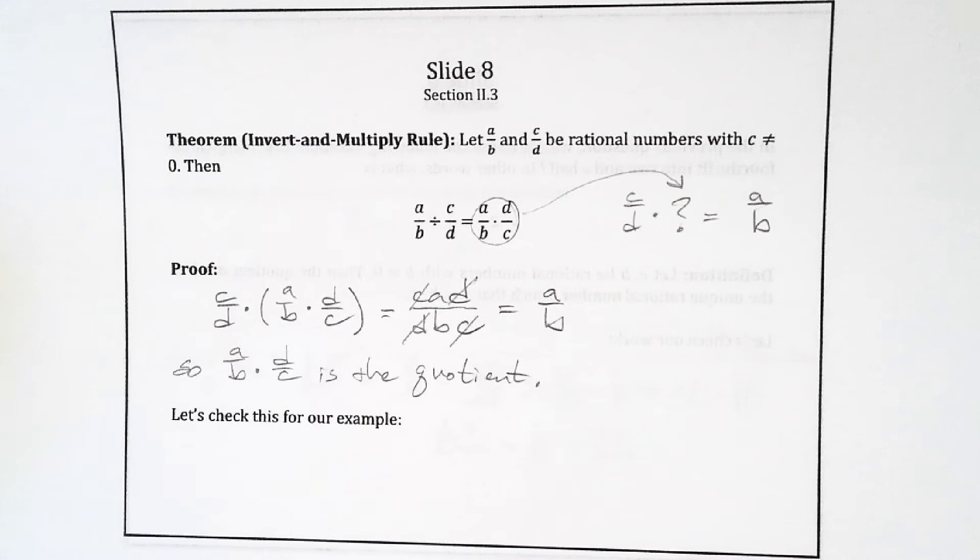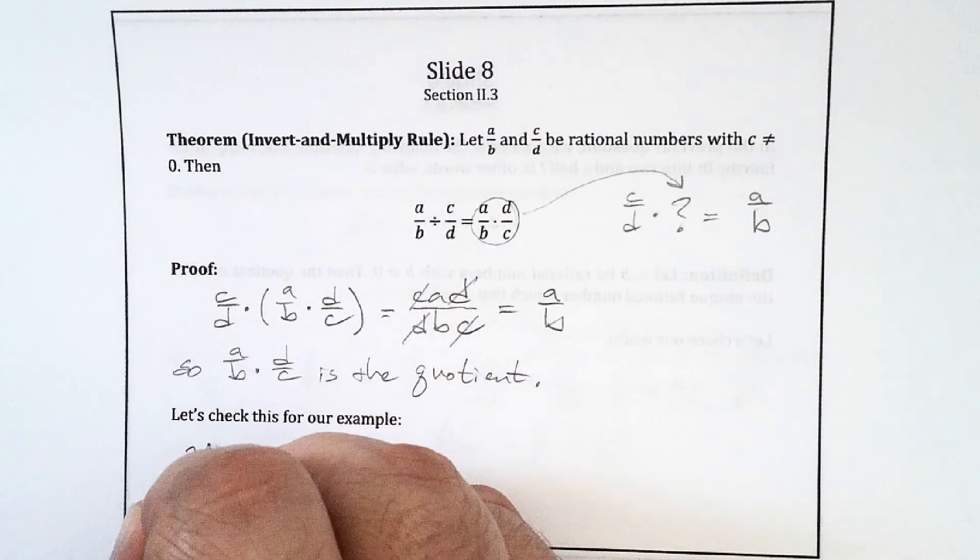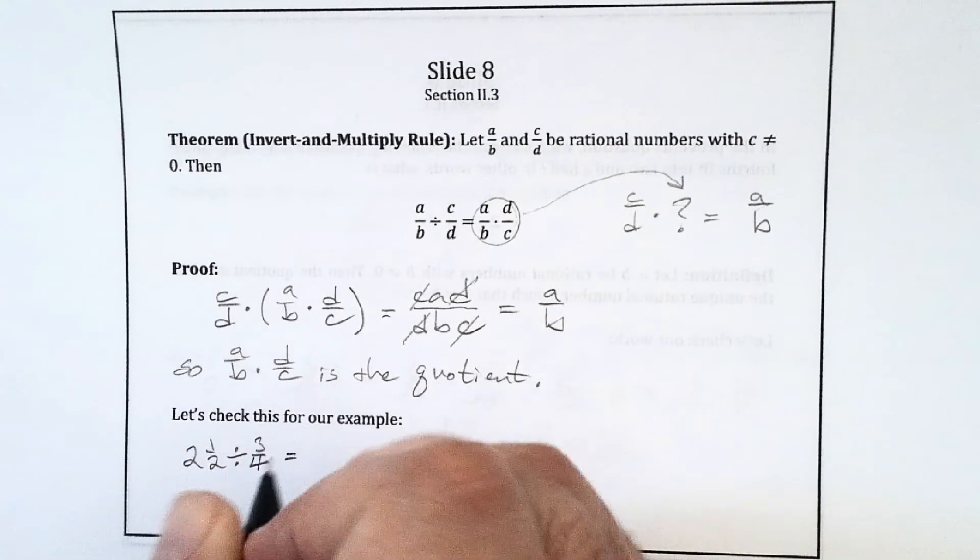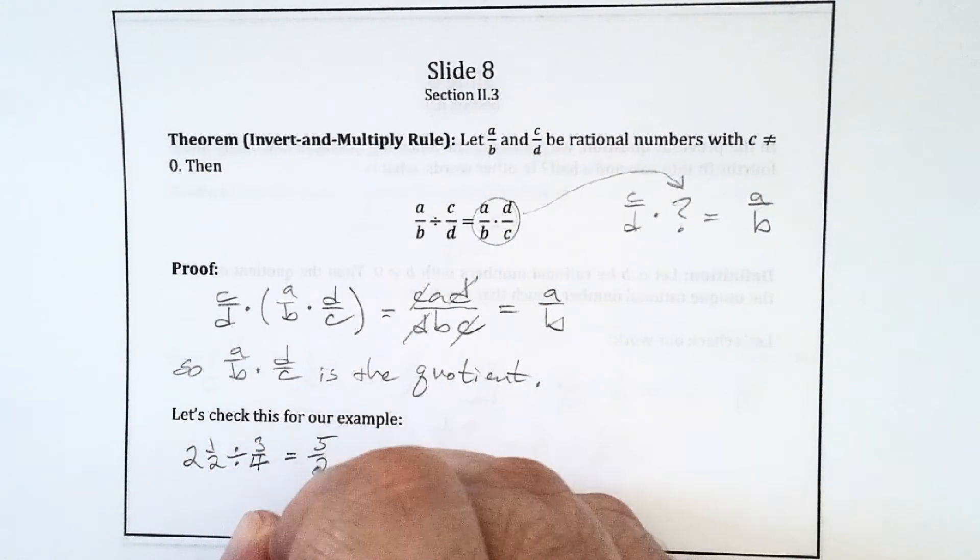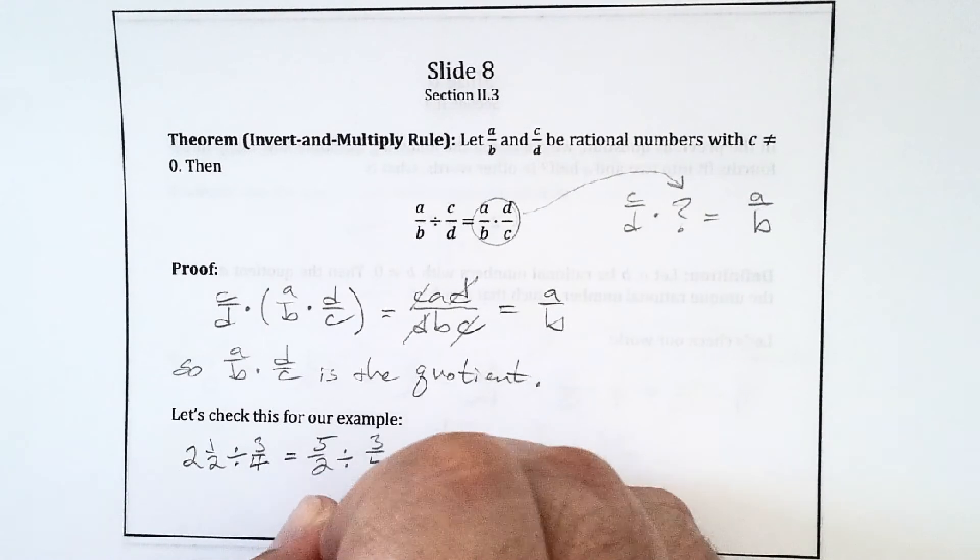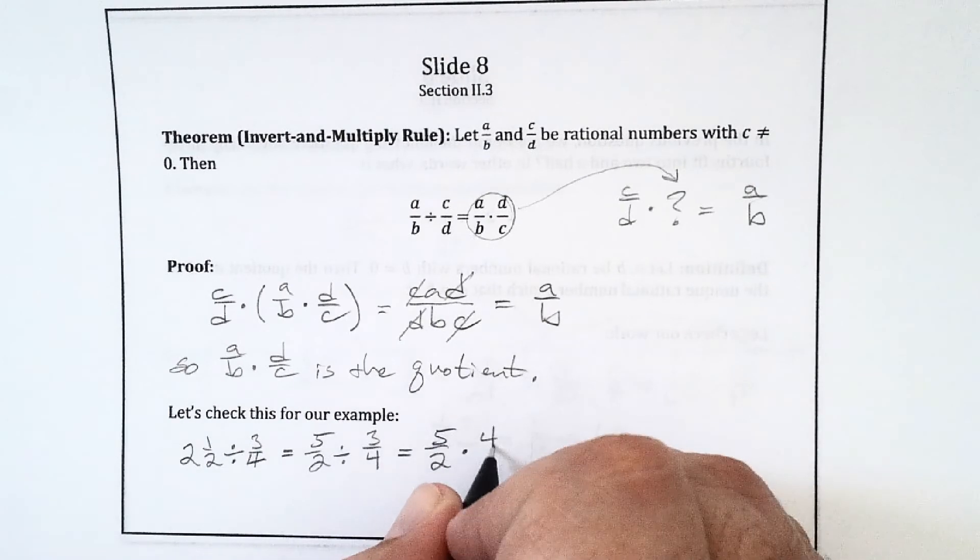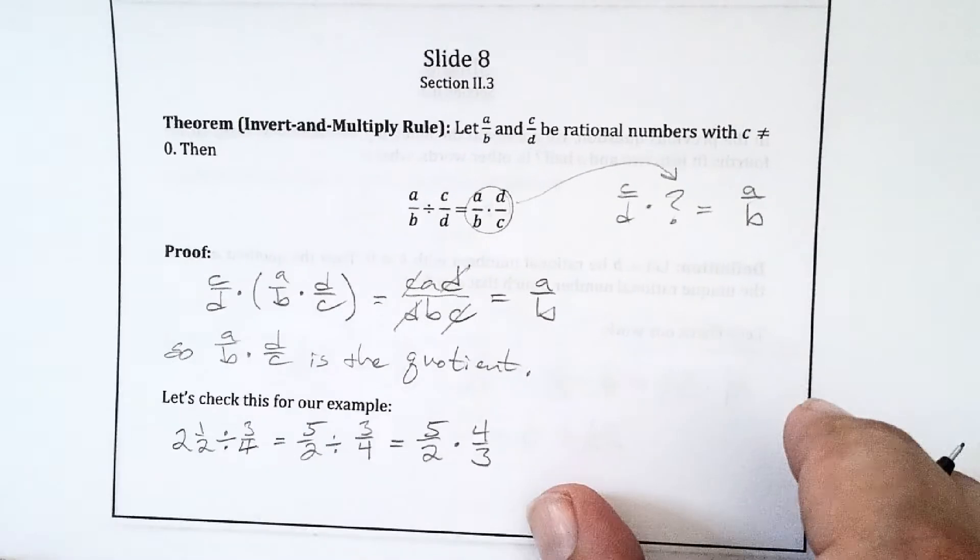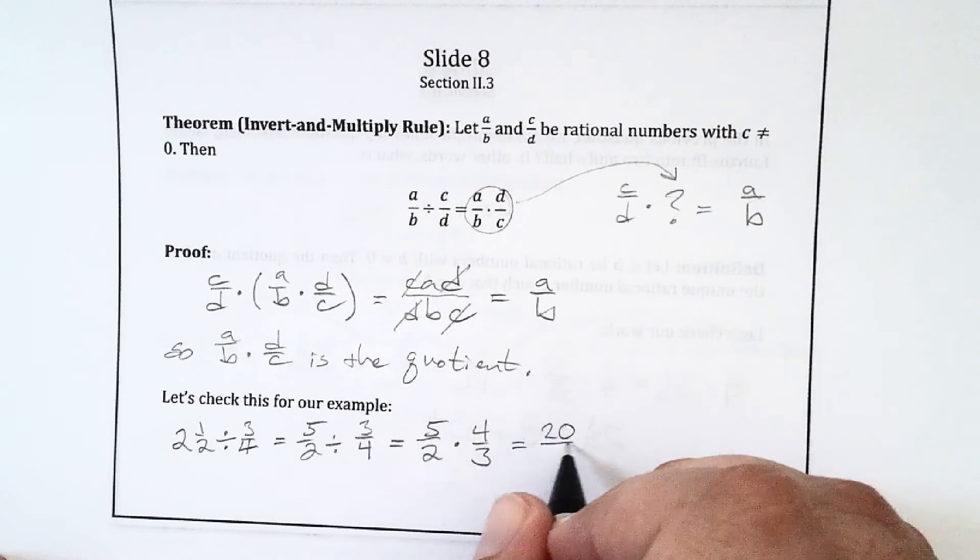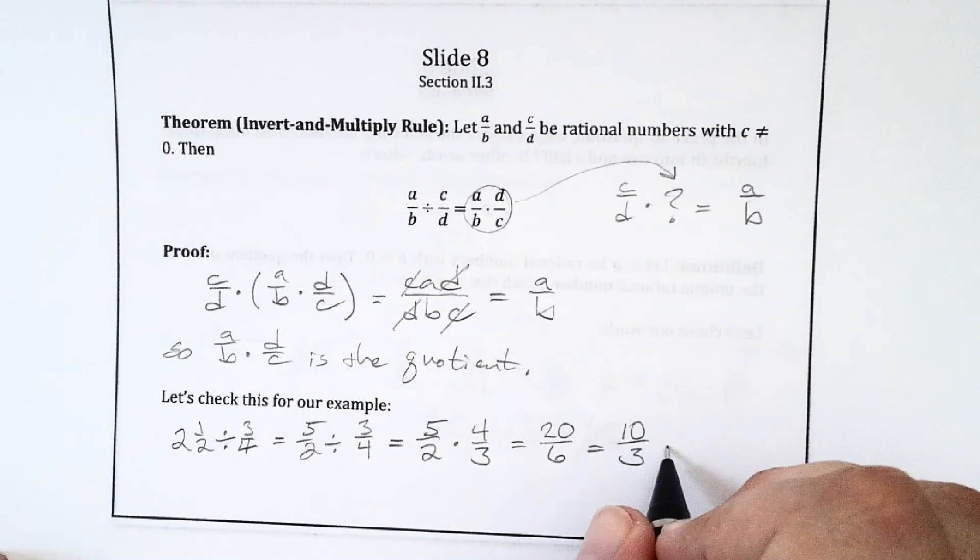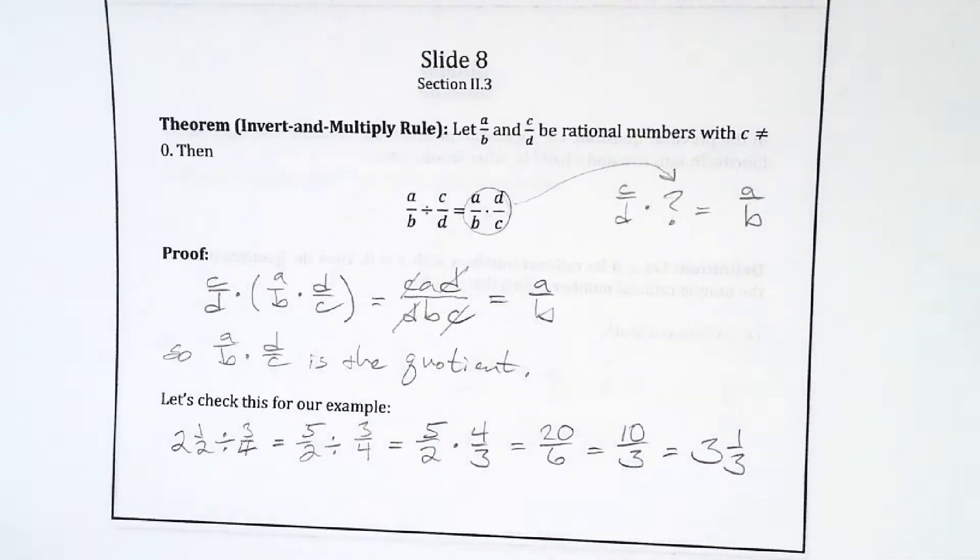Okay, so let's check this for our example, where we did 2 1/2 divided by 3/4. So 2 1/2 divided by 3/4, that's 5/2 divided by 3/4, which according to the rule is 5/2 times 4/3, which is 20 over 6, which is 10 over 3, which is 3 1/3. Which is what we got.